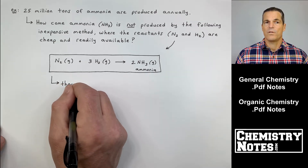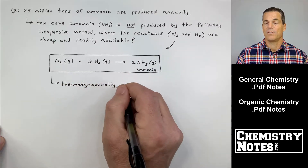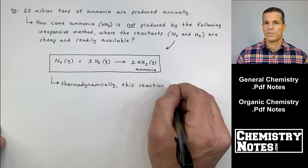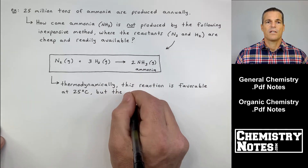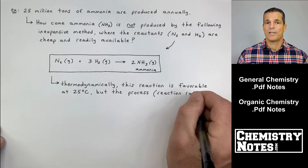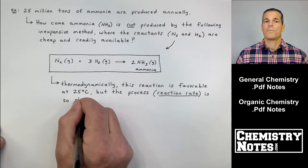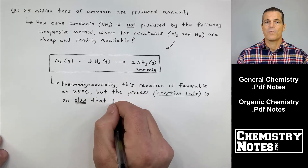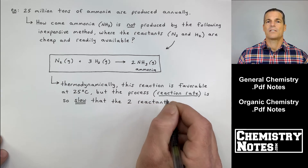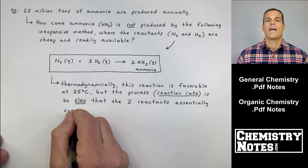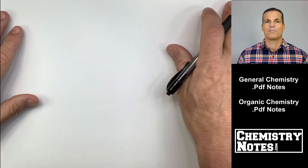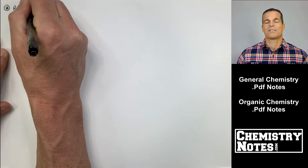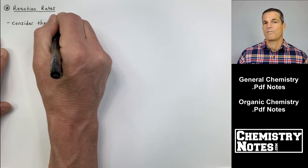Why isn't this the reaction used to produce that 25 million tons of ammonia annually? Thermodynamically, this reaction is favorable at 25°C — it is spontaneous and does take place on its own. However, the reaction rate is so slow that the two reactants essentially coexist indefinitely. It takes a ridiculously long time at regular conditions like 25°C, so we must use other, more expensive methods.